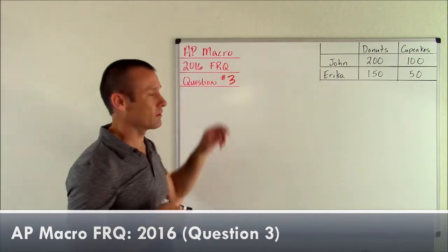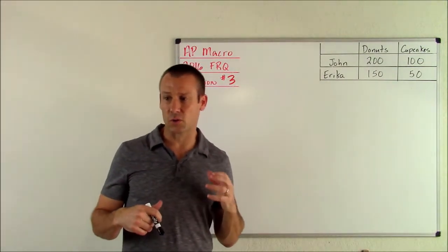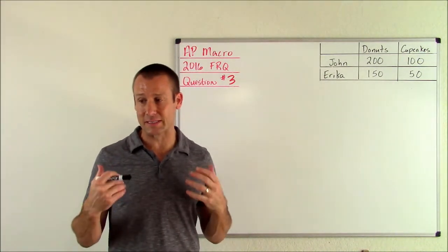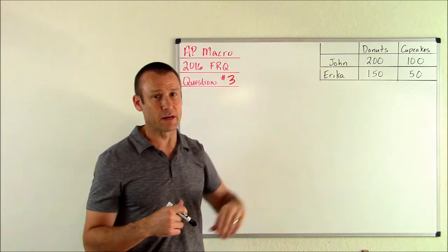Hey everybody, this is AP Macro 2016 FRQ, question 3. Let's get to it. The following shows the number of donuts and cupcakes that John and Erica can each produce in one day. There's the table right there.